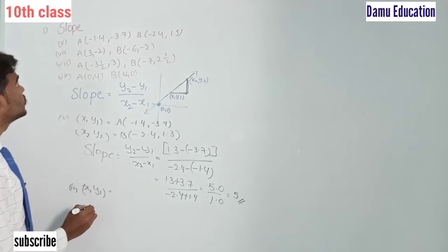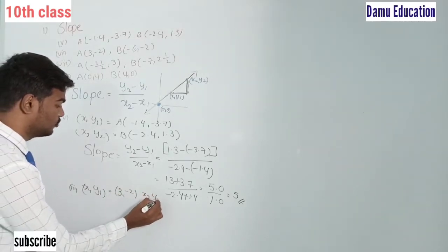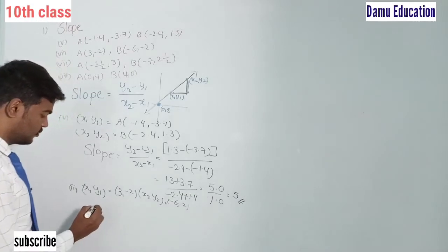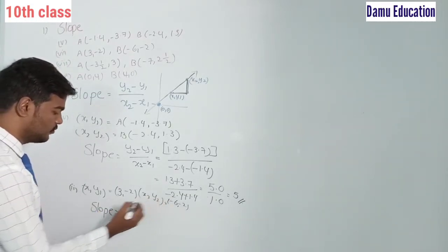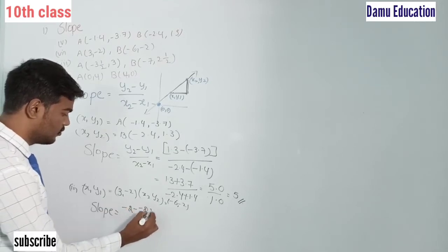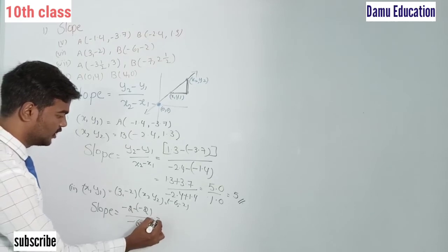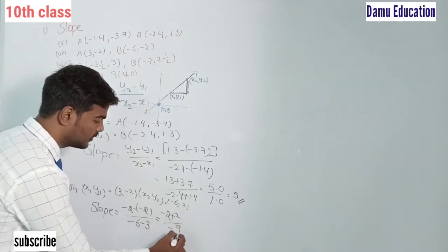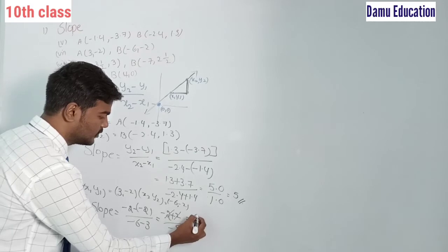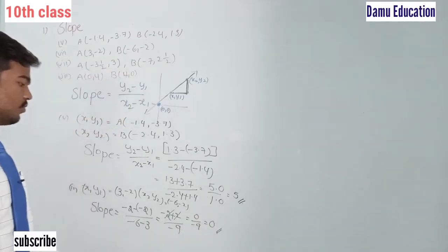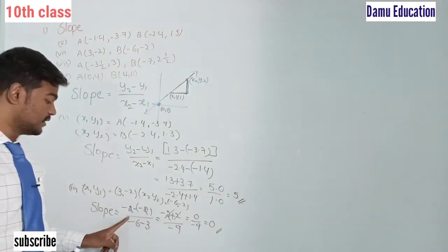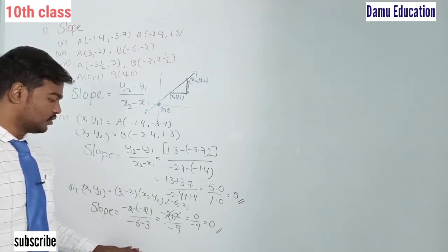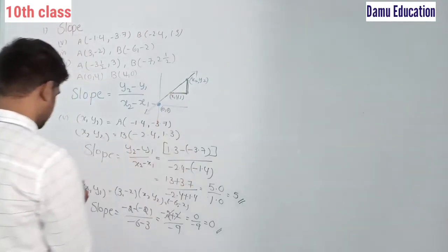For the sixth example, x1, y1 = (3, -2) and x2, y2 = (-6, -2). Slope = (y2 - y1) / (x2 - x1) = (-2 - (-2)) / (-6 - 3) = (-2 + 2) / (-9) = 0 / (-9) = 0. So the slope for the sixth example is 0.